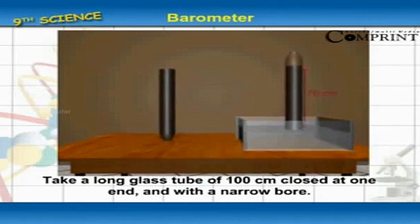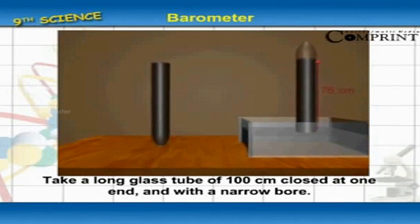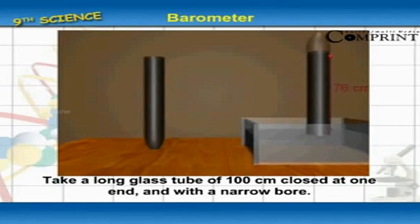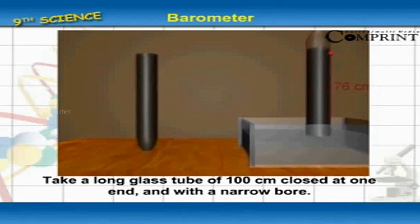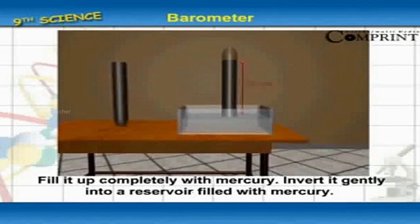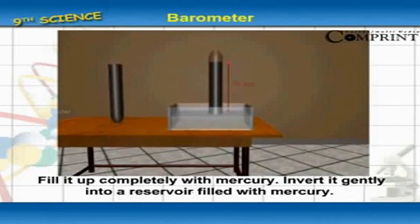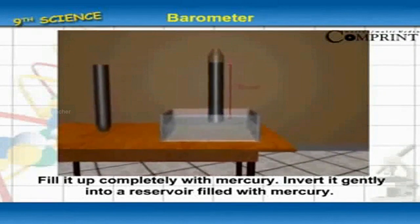Take a long glass tube of 100 cm closed at one end and with a narrow bore. Fill it up completely with mercury. Invert it gently into a reservoir filled with mercury.